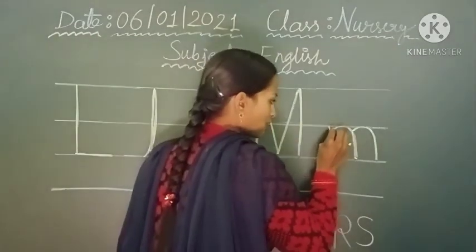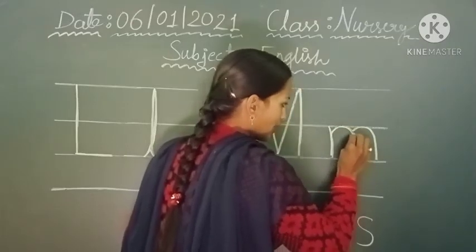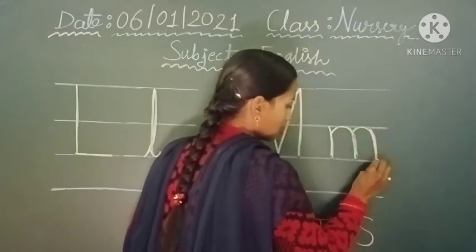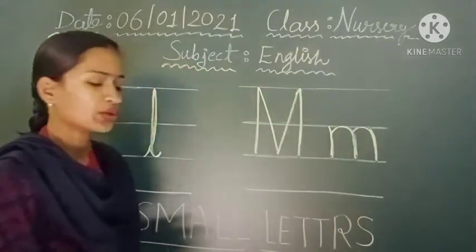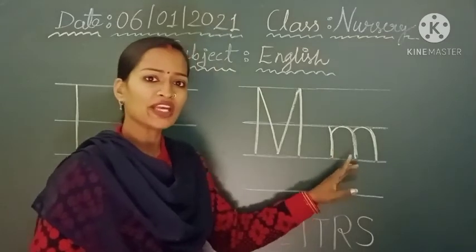And then after, one curve line and again one curve line. And your small letter M is ready.